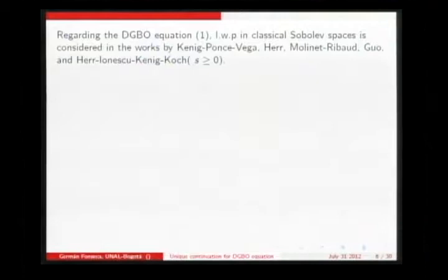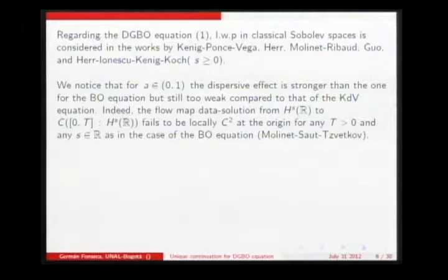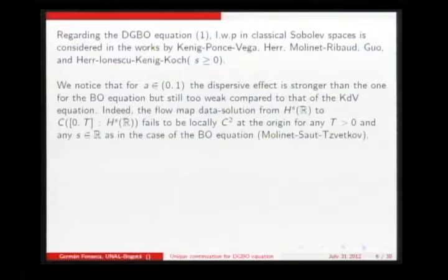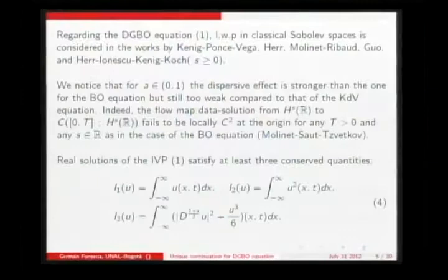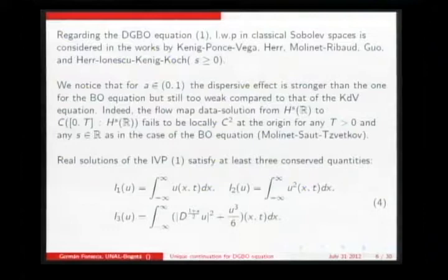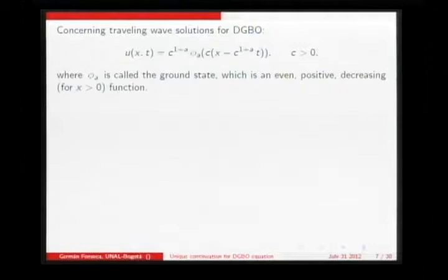For the dispersion generalized Benjamin-Ono equation, we have local well-posedness in sub-level spaces up to L^2, from the work by Herr, Ifrim, Kenig, and Koch, and global well-posedness as well. The qualitative behavior of the dispersion generalized equation is closer to the Benjamin-Ono equation. In particular, the map from initial data to solution is not C^2, so we cannot use Picard iteration. Regarding conserved quantities, we know at least three, and in particular the conservation of the mean value and the L^2 conservation law will be important.